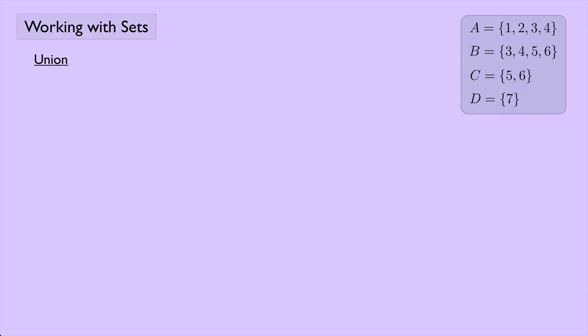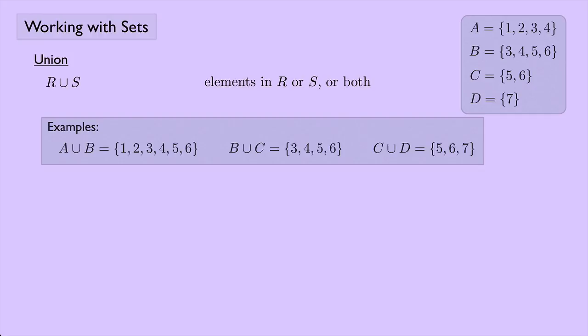Now let's look at the union. R union S means we're looking at elements that are in R or elements that are in S or elements that are in both R and S. For an example we have A union B. A union B means anything that's in A or anything that's in B or anything that happens to be in both A and B.